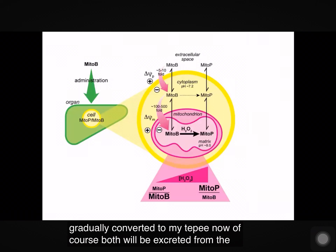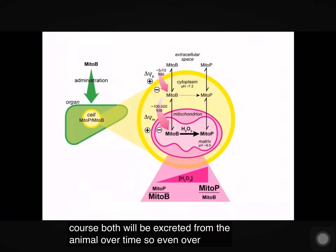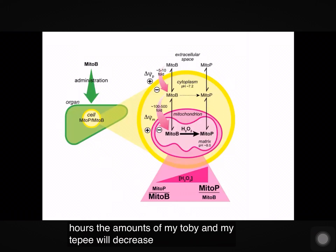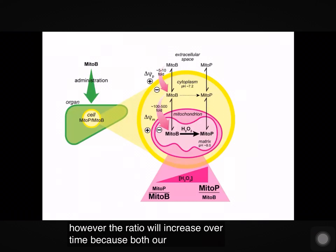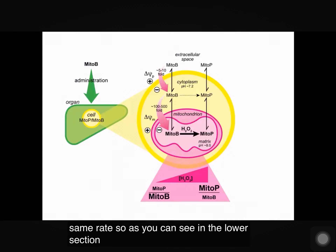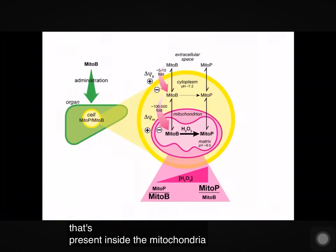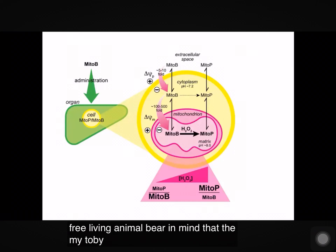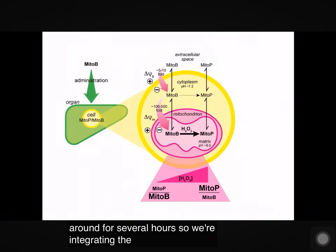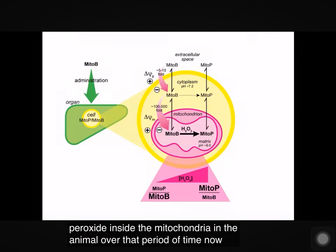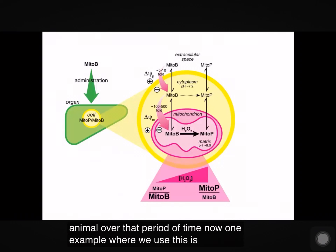Both MITOB and MITOBOL will be excreted from the animal over time, so their amounts will decrease considerably. However, the ratio will increase over time because both are excreted at the same rate. The greater the ratio of MITOBOL to MITOB indicates the greater amount of hydrogen peroxide present inside the mitochondria in the free-living animal. Bear in mind that after injecting MITOB, we leave the mouse or fly to move around for several hours, so we're integrating the average hydrogen peroxide inside the mitochondria over that period of time.